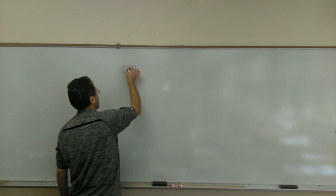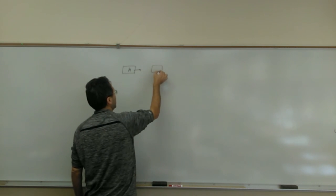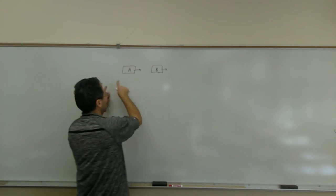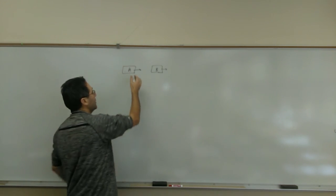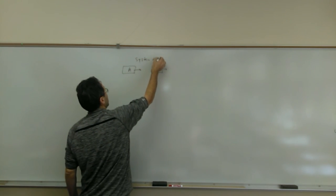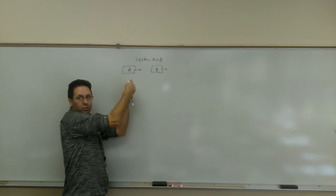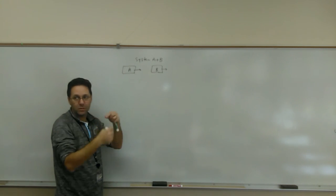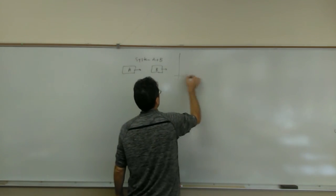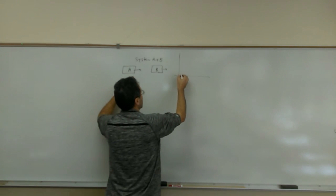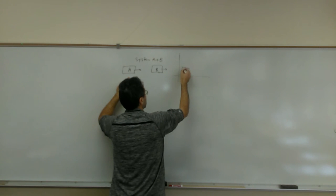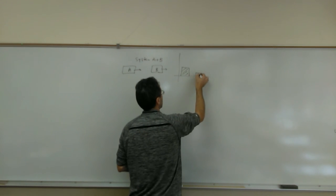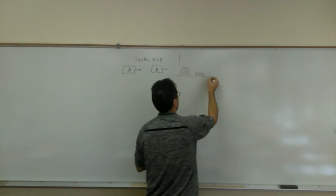Let's try another example: object A traveling to the right and object B also traveling to the right but at a slower speed. A collision happens and they stick together. I'm going to pick my system to be A and B together, which means the interaction between them is internal, so the impulse is zero. A has this much momentum and B has this much momentum since it's going slower, and A and B together must have the combination of both.